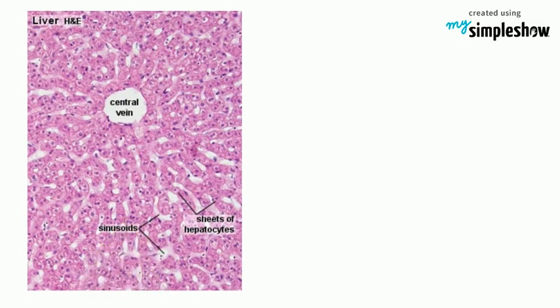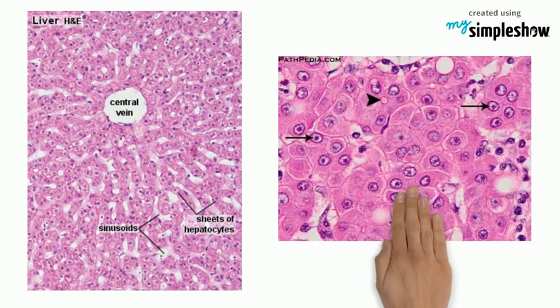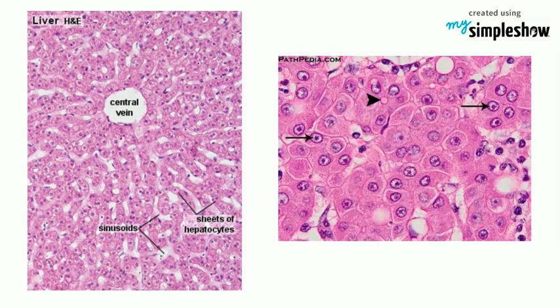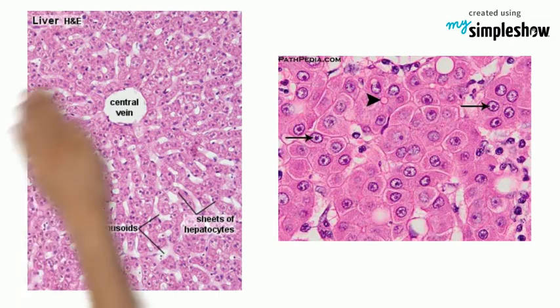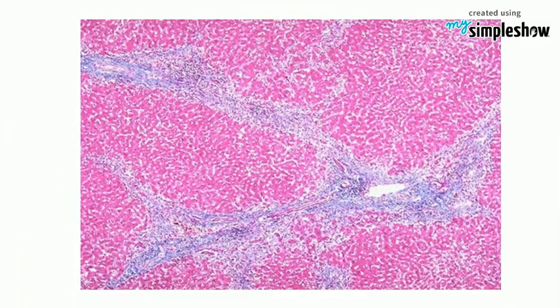Normal hepatocytes are arranged in single-cell thick plates separated by sinusoids. In HCC, plates are two-plus cells thick and cell nuclei are enlarged and convoluted. Large tumor nodules are separated by thick fibrous bands shown as blue webbing.